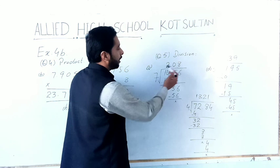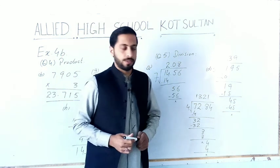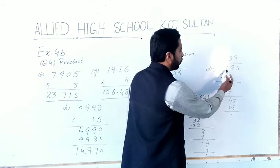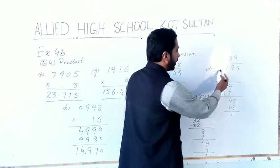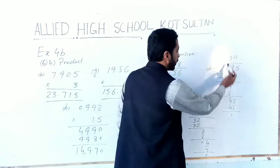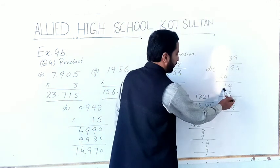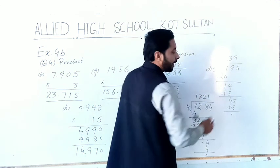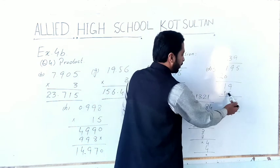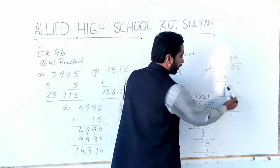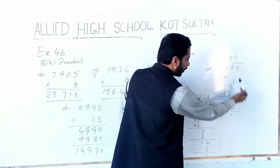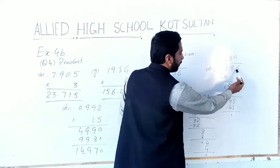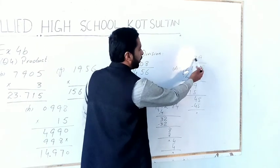The next part is 21.95 divided by 5. 5 × 4 = 20, one left. Bring down 9 to get 19. 5 × 3 = 15, remainder 4. Bring down 5 to get 45. 5 × 9 = 45. We place the decimal point after two digits and the answer will become 4.39.